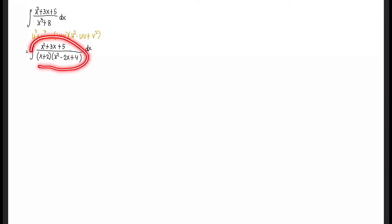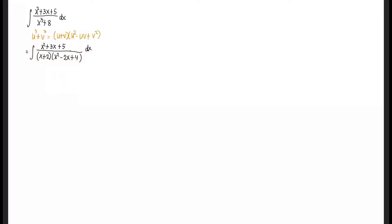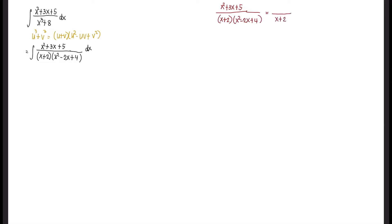We will now resolve this fraction into partial fractions based on its denominator. We have a linear denominator that is not repeated and a quadratic factor that is also not repeated — Case 1 and Case 3. We write the fraction as x squared plus 3x plus 5 over (x plus 2)(x squared minus 2x plus 4), equated to a fraction with denominator x plus 2, whose numerator is a constant A, plus a fraction with denominator x squared minus 2x plus 4, whose numerator is linear in the form Bx plus C.